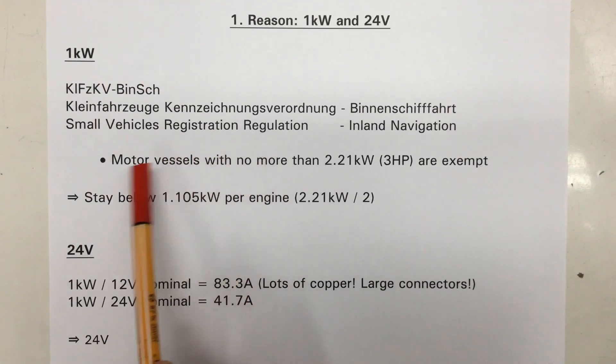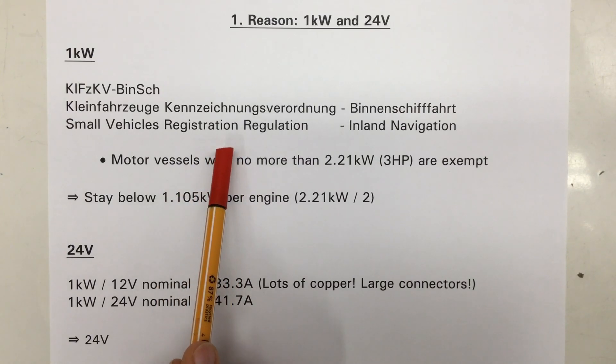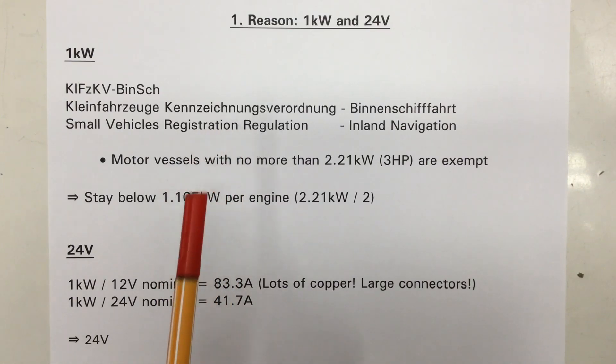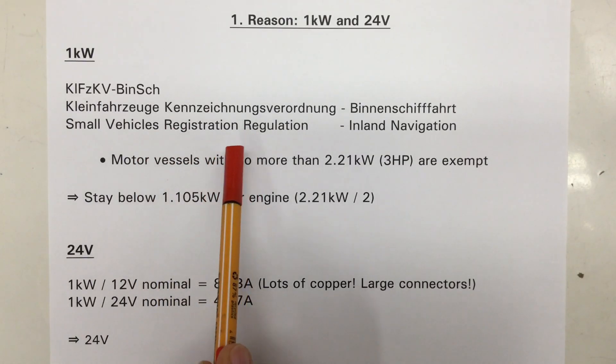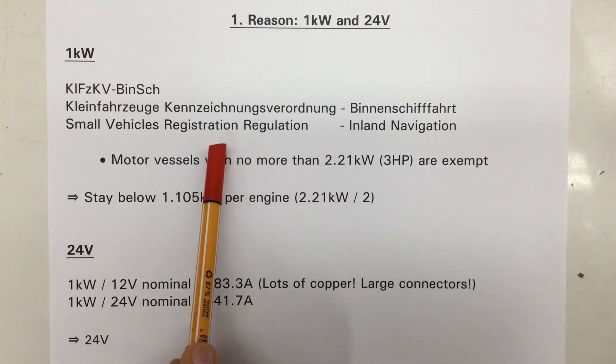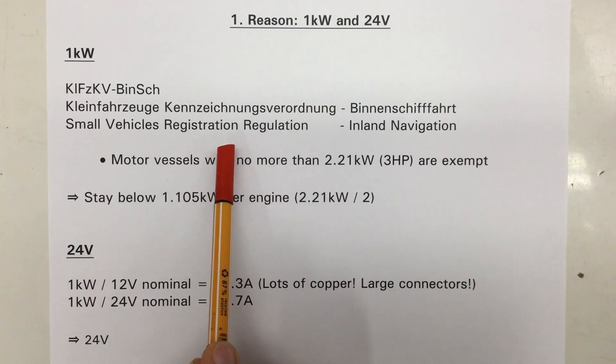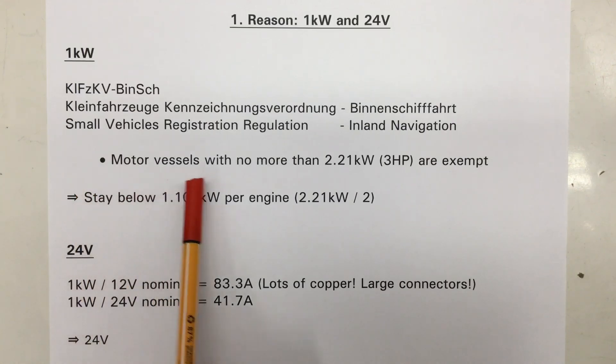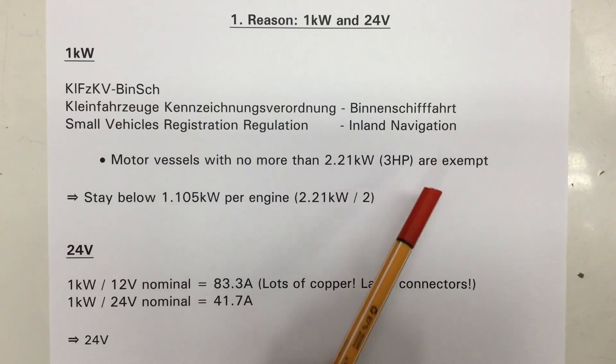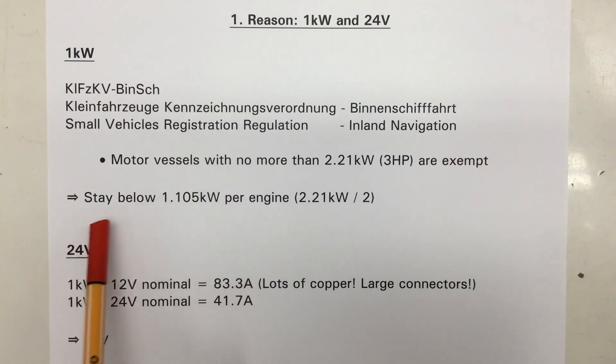Now, getting such a registration number for an off-the-shelf vessel with off-the-shelf engines is neither complicated nor expensive. However, getting such a registration number for, let's say, a self-built vessel with highly modified engines is quite a hassle. You have to submit a lot of paperwork, plans, etc. Fortunately, motor vessels with no more than 2.21 kilowatts or 3 metric horsepower are exempt from that regulation.